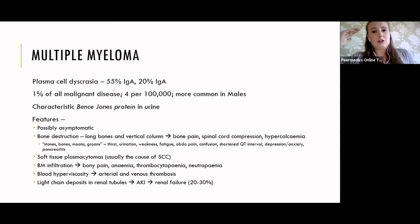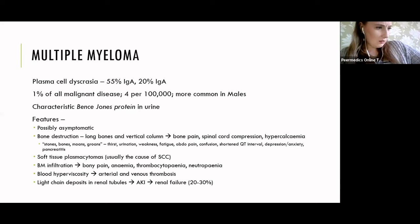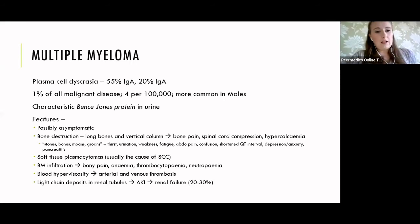You might also see it described as plasma cell dyscrasia, because it's coming from plasma cells - which come from B cells and are your antibody-producing cells. The immunoglobulin breakdown is approximately 55% IgG and 20% IgA. It accounts for about 1% of all malignant disease, so not common at all, but examiners love it because there are just so many weird and wonderful symptoms.